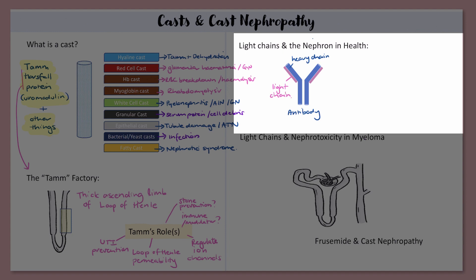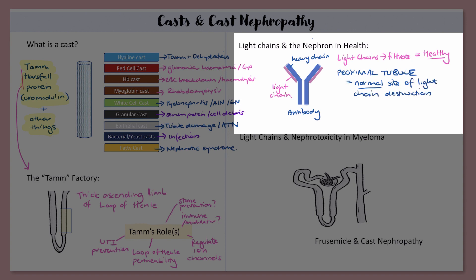In health, light chains are produced constantly and broken down all the time. The usual place for light chain breakdown is the proximal tubule in the nephron. Light chains are very small, they are freely filtered, and they enter the proximal tubule. The proximal tubule has specific mechanisms in place to take in light chains from the filtrate, break them down into amino acids, and return these amino acids to the bloodstream. This is entirely normal and causes no problems at all.